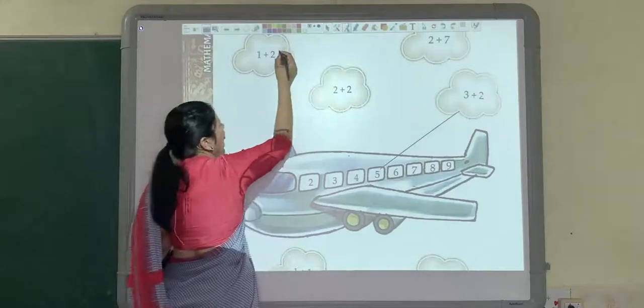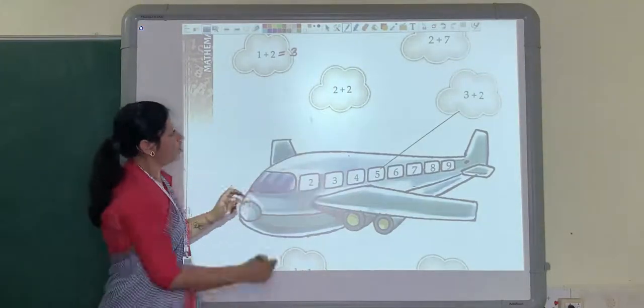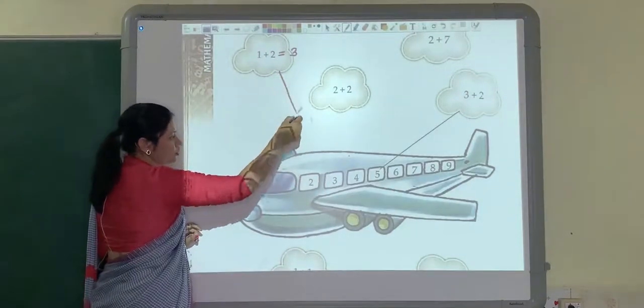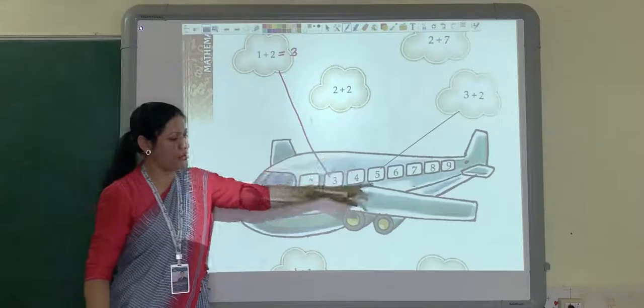For example, 1 plus 2 is equal to 3. So where is the 3 number? Here. So you will match this cloud to 3. So like this, you will solve all these clouds.